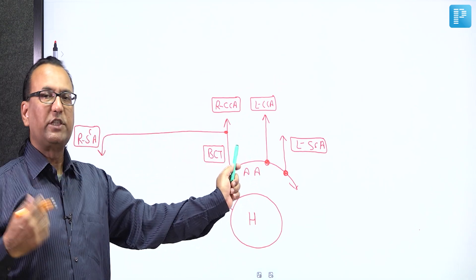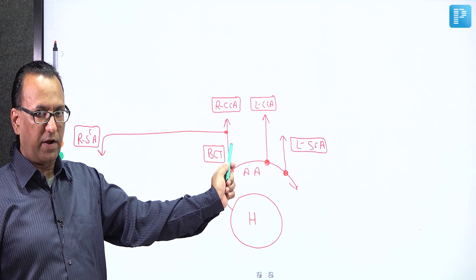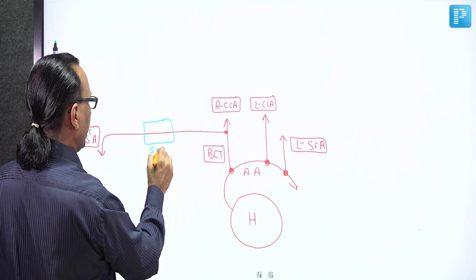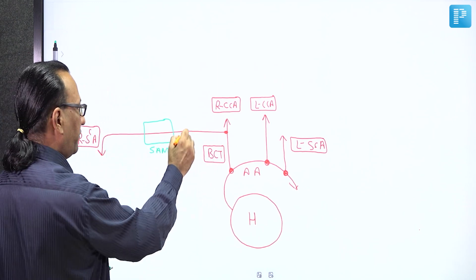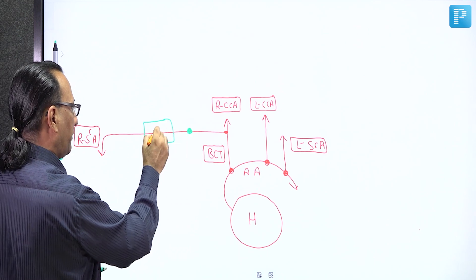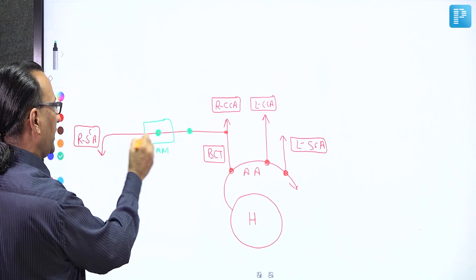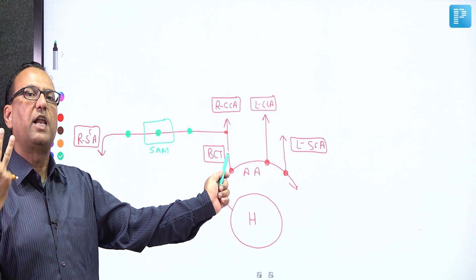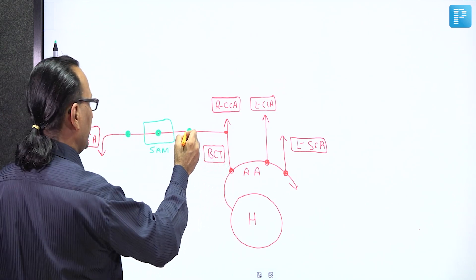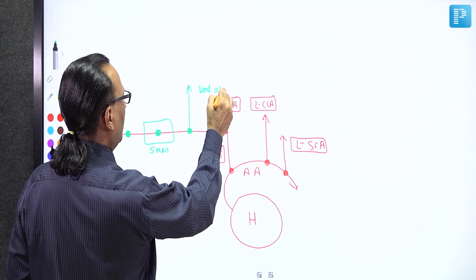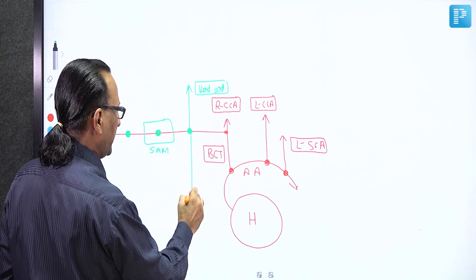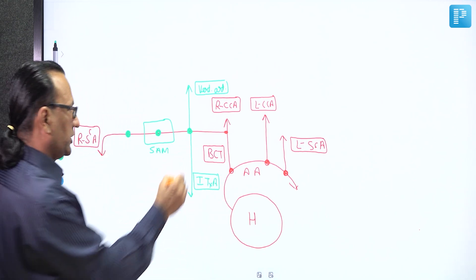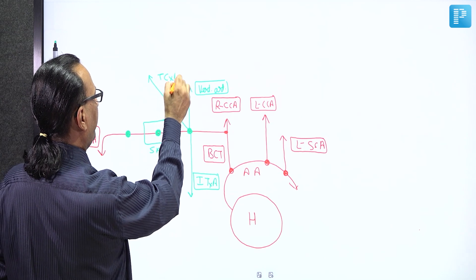Our focus is on the subclavian artery, which is covered by the scalenus anterior muscle dividing it into three parts. The first part of the subclavian artery gives the VIT branches: V is the vertebral artery going up to supply the circle of Willis, and I is the internal thoracic artery descending to supply the thorax region. Then we have T, the thyrocervical trunk.